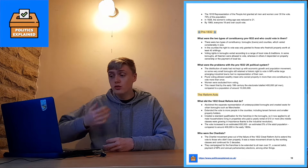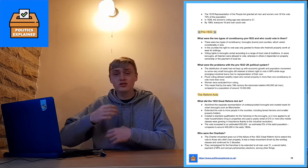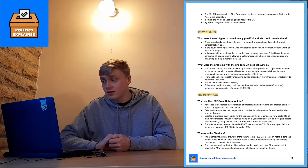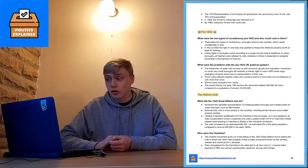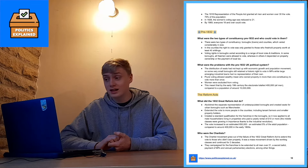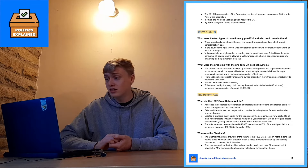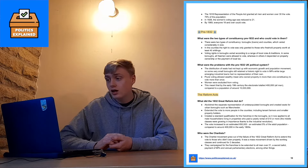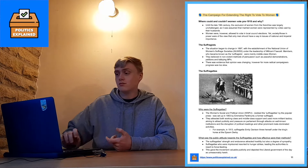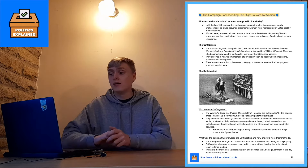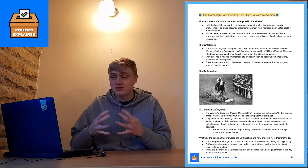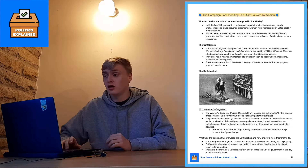The 1832 Great Reform Act abolished the separate representation of underpopulated boroughs, created seats for urban boroughs such as Manchester, extended the vote to more people in the counties including tenant farmers and smaller property holders, and set a standard qualification for the franchise in boroughs — now applying to all male householders living in property with a yearly rent of £10 or more. The vote increased to an estimated 650,000 — about 5% of the adult population — still very undemocratic. The Chartists were a key movement that grew out of the failure of the 1832 Act to extend the vote to those who didn't own property. A mass movement driven by the working classes, they campaigned for the franchise to be extended to all men over 21, a secret ballot, payment of MPs, and annual parliamentary elections.